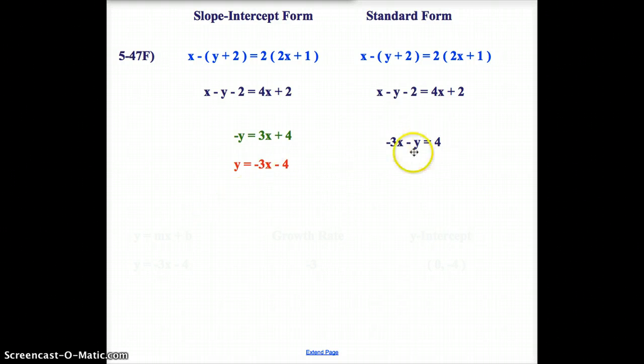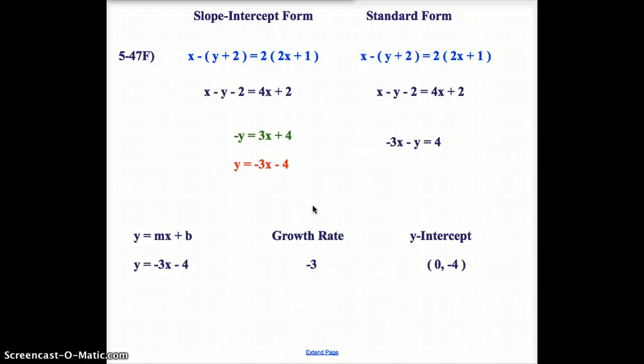But again, I'm not worried about the standard form. We are worried about the slope-intercept form. So, somewhere down here, there it is. Now, I can record, again, my y equals mx plus b format, which is y equals negative 3x minus 4, my growth rate, which is negative 3, and my y-intercept, which is 0, negative 4, when I leave that in coordinate form.